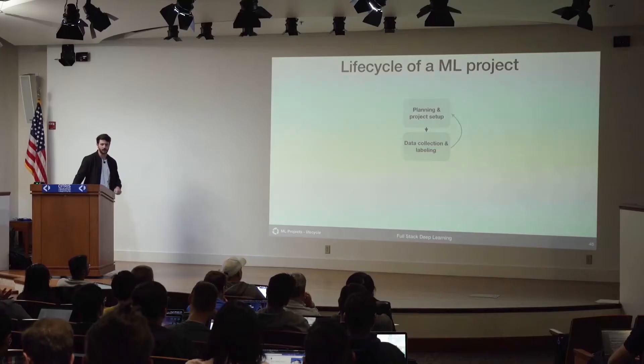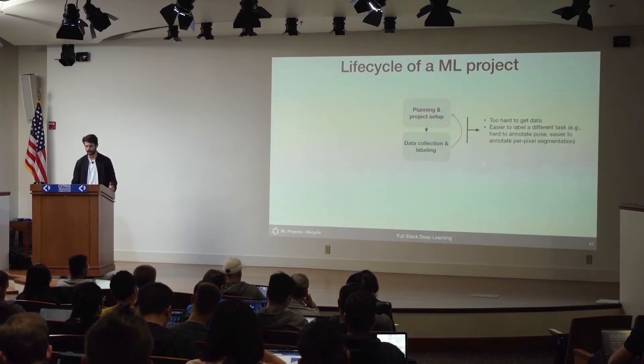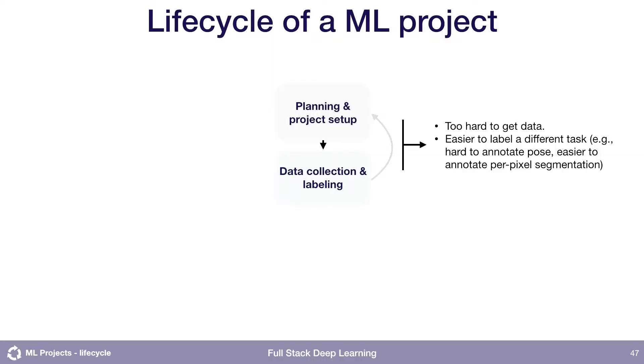One important point about the life cycle of machine learning projects is that it's not really a linear flow. At each step, you can iterate back to the previous steps. For example, if we go through the data collection phase and then realize that for this problem it's just going to be too hard to get data — or maybe it's not hard to get data but it's very hard to label the data — then you might actually go back into the project planning phase and rethink whether we can set up this project in a better way.